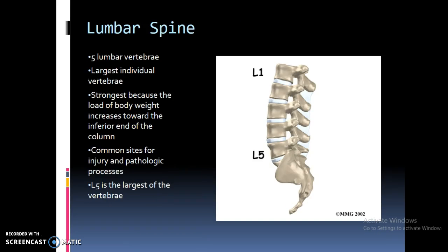There are five lumbar vertebrae. L5 is the largest individual vertebra in the body and also the strongest because of the load it bears. The weight increases towards the inferior end of the column, so the spine has to be bigger to support it at the lower back. These are common sites for pathologic processes and injuries. They do generally get bigger from L1 to L5, but it's a very gradual difference.